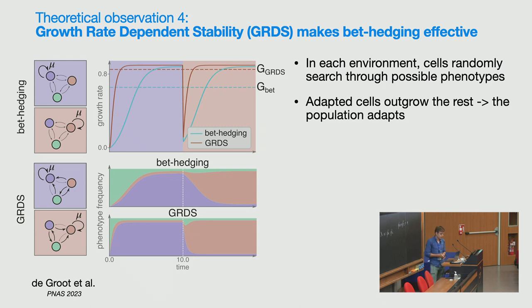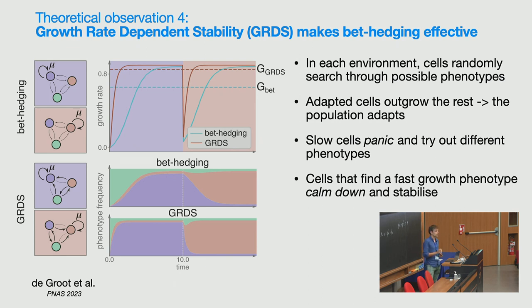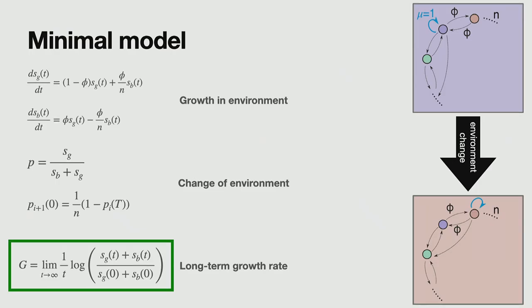How does this work? Well, if we look at the moment, at the point where we start a new environment, almost all the cells are in the purple phenotype. But when we switch to the red environment, these purple cells, they will all start to stop growing. And this will increase their phenotype switching rates. So these slow cells will kind of panic and just move around searching for a growth rate. And they will only stabilize once they find this fast growth phenotype. And on top of that, so this biases already the population towards phenotypes where you grow fast. On top of that, they will still outgrow the other cells in different phenotypes. So you have a double advantage of being in this fast growth phenotype. So I can of course also calculate the consequences in my model.